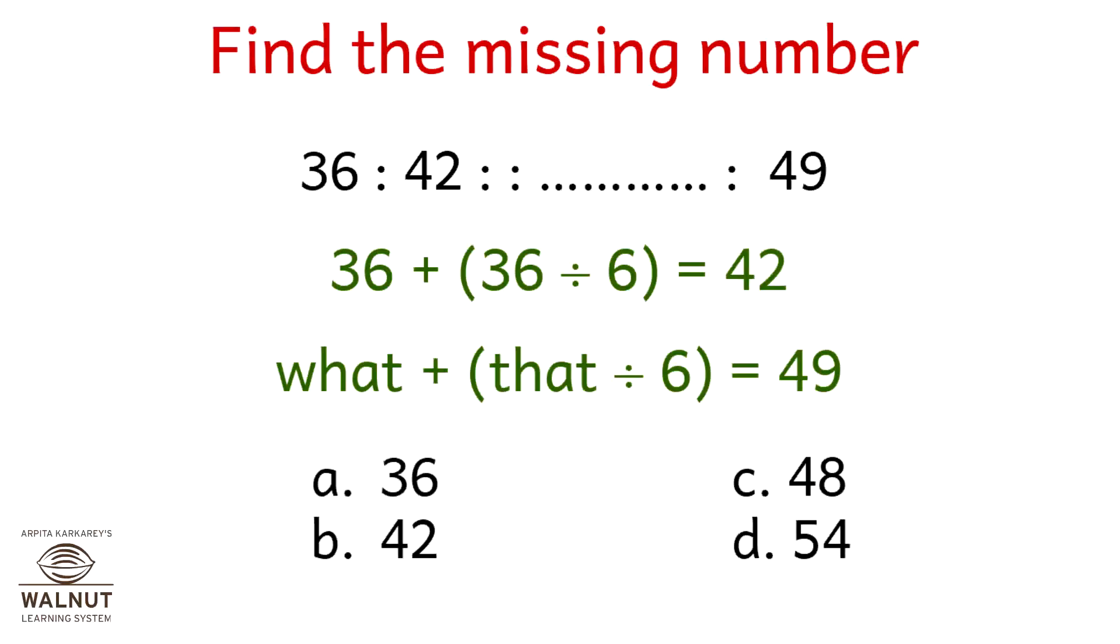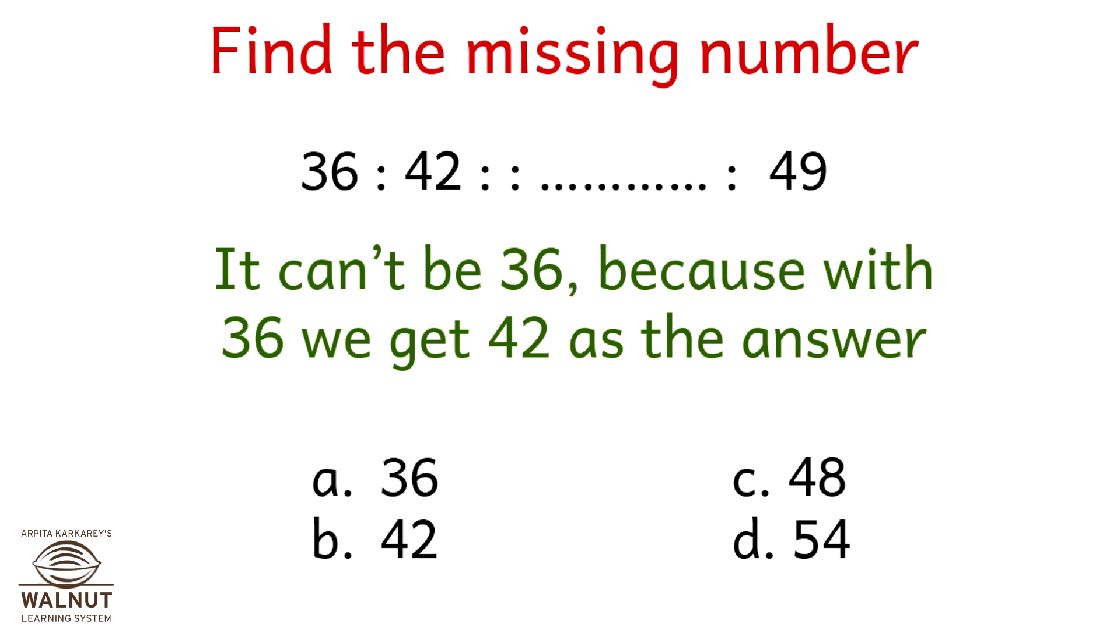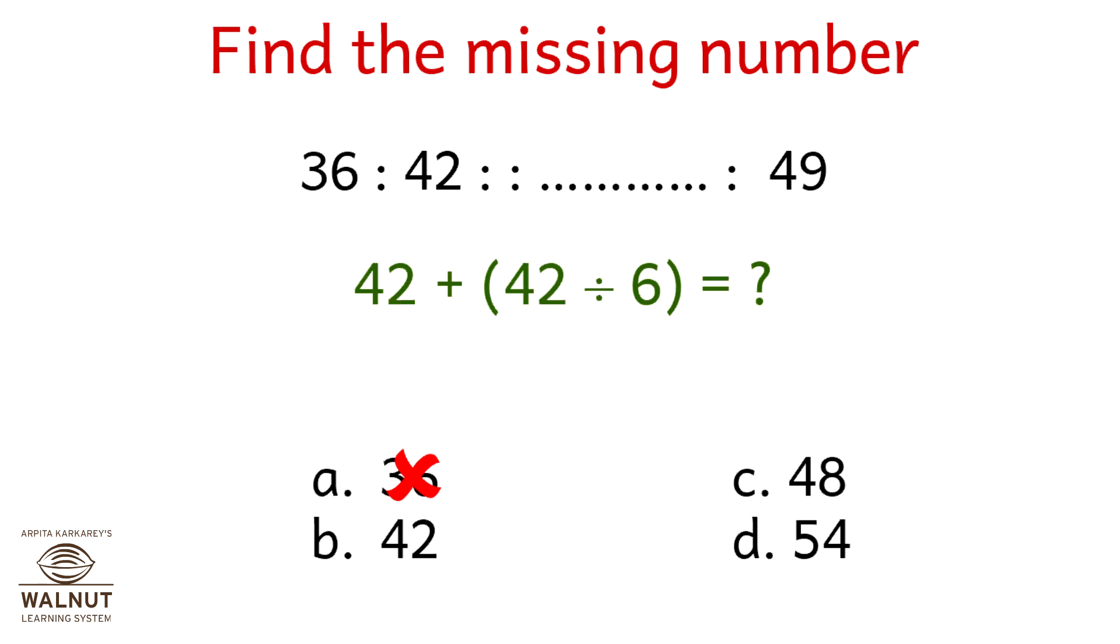Find the missing number. 36 is to 42 as what is to 49? 36 plus 36 divided by 6 is 42. So what plus that divided by 6 is 49? Reverse calculate from the options that you are given. It can't be 36 because using 36 we get 42 as the answer. So let's try 42. 42 plus 42 divided by 6 is 49, right? So we have option b as the correct answer.